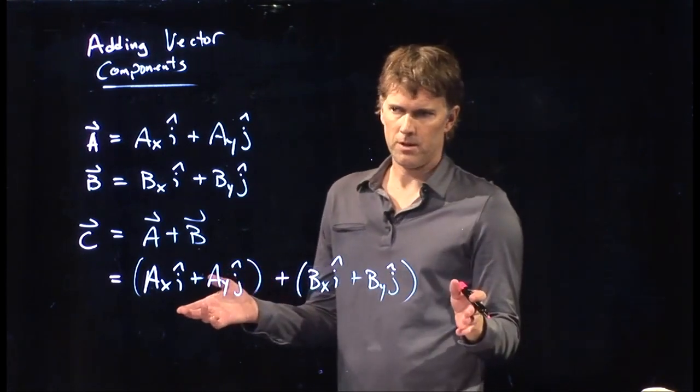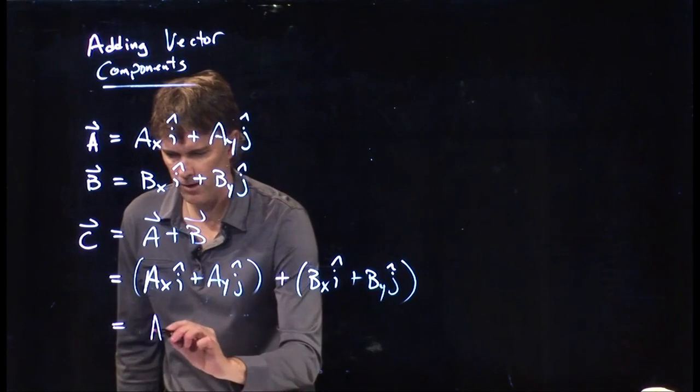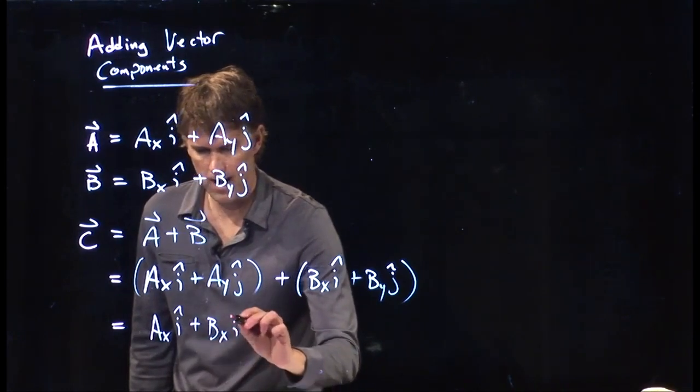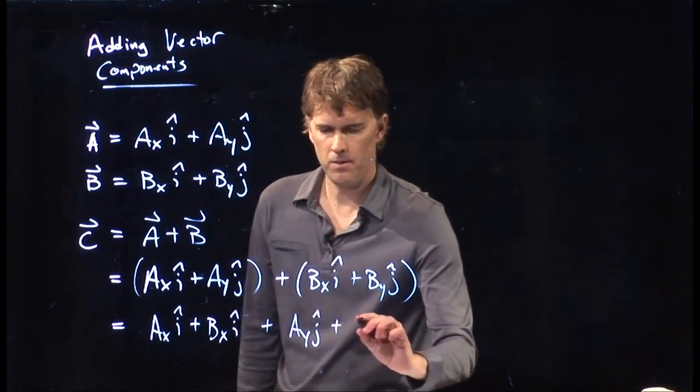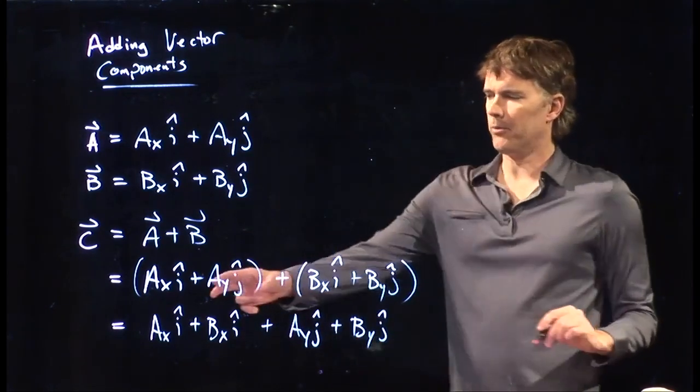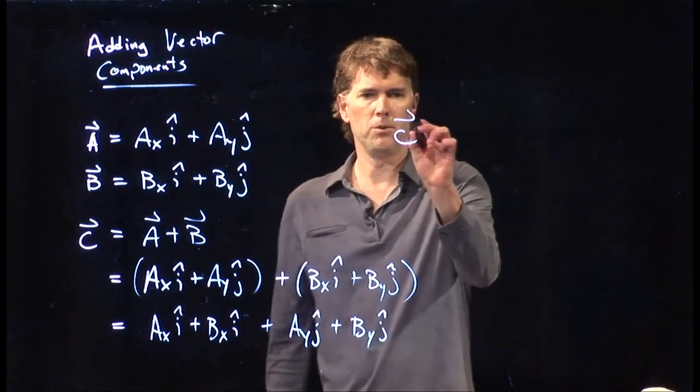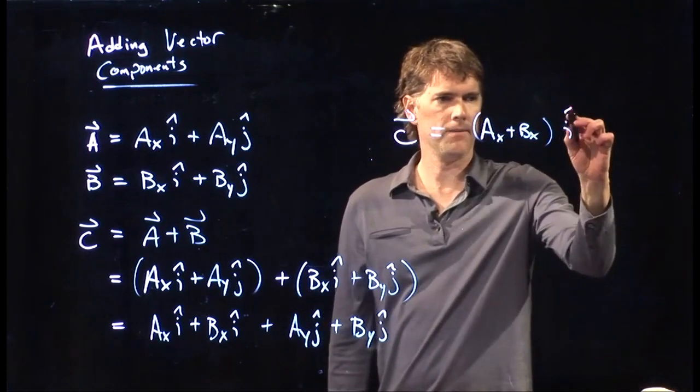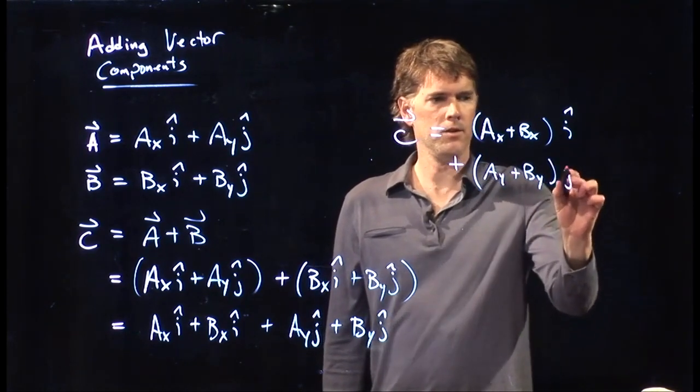And now those parentheses are irrelevant. We don't need the parentheses anymore. And so we can rewrite this as the following: Ax i-hat plus Bx i-hat plus Ay j-hat plus By j-hat. And now look what happens. We have common terms in the first two, we have common terms in the second two. And so we can put them together and we get the following: Ax plus Bx i-hat plus Ay plus By j-hat.